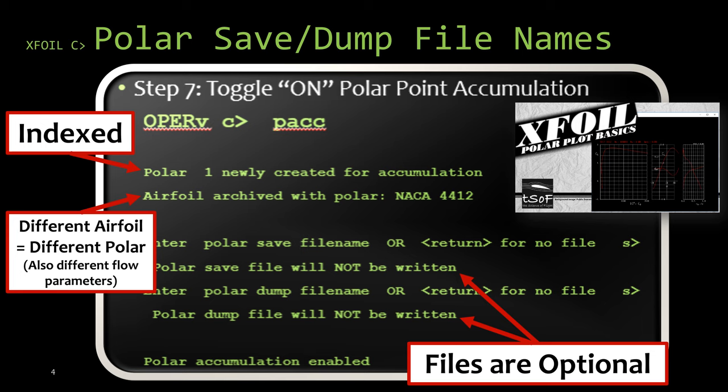Now there's a reason for this. If you change what airfoil you're using, or the name of the airfoil you're using, or if you change the flow parameters, the Reynolds number, Mach number, then you have to create a new polar file.